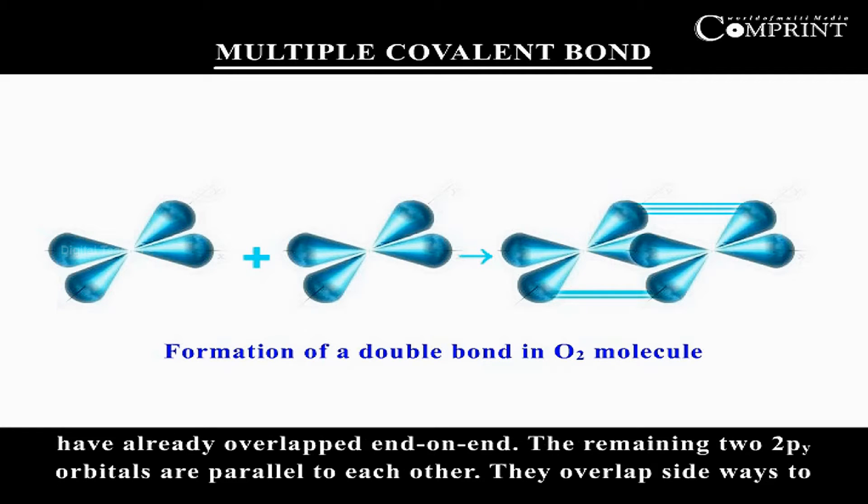Two 2pz orbitals have already overlapped end-on-end. The remaining two 2py orbitals are parallel to each other. They overlap sideways to form a pi bond.